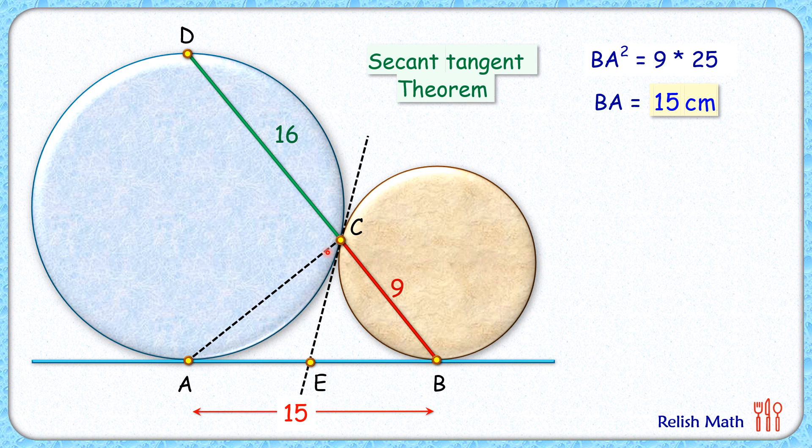Here we'll prove that angle C is 90 degrees. From point E, we have two common tangents EA and EC drawn on the blue circle, so they will be equal in length. Same from point E: EC and EB are the two tangents drawn on this brown circle, so by theorem they will also be equal in length.